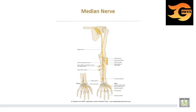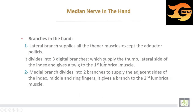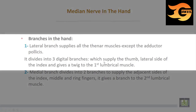The median nerve arises by two roots in the axilla from the lateral and medial cords of the brachial plexus, descends in the upper arm with no branches, then descends in the forearm passing between the two heads of pronator teres muscle. In the hand, the median nerve gives a lateral branch supplying all thenar muscles except adductor pollicis, and divides into three digital branches supplying the thumb and lateral sides of the index finger, giving twigs to the first lumbrical muscle.